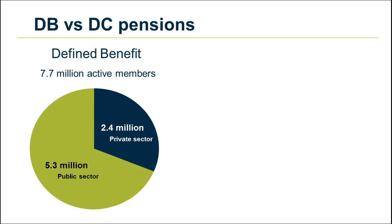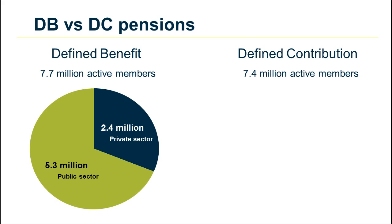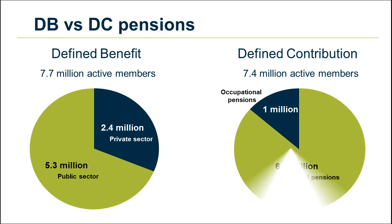This pie chart shows that over two-thirds of these were working in the public sector. Looking at defined contribution schemes, we see that there were 7.4 million active members. Most of these were contributing to personal pensions, with just 1 million currently contributing to defined contribution occupational schemes.